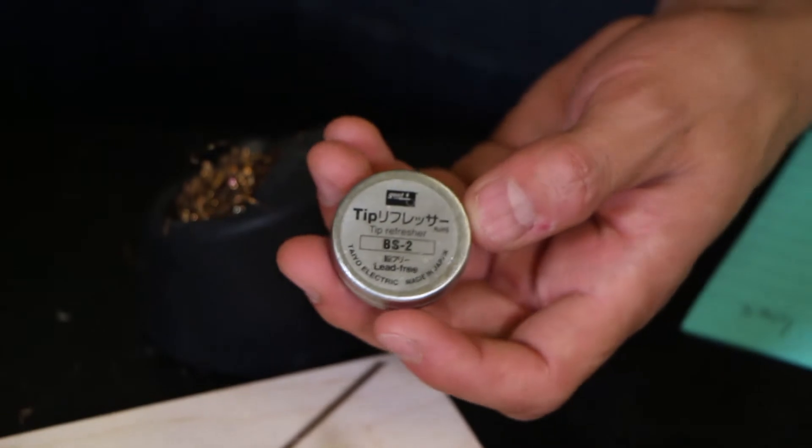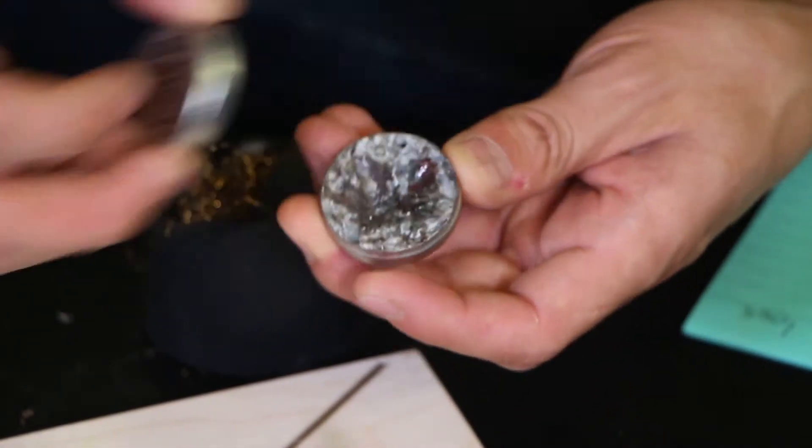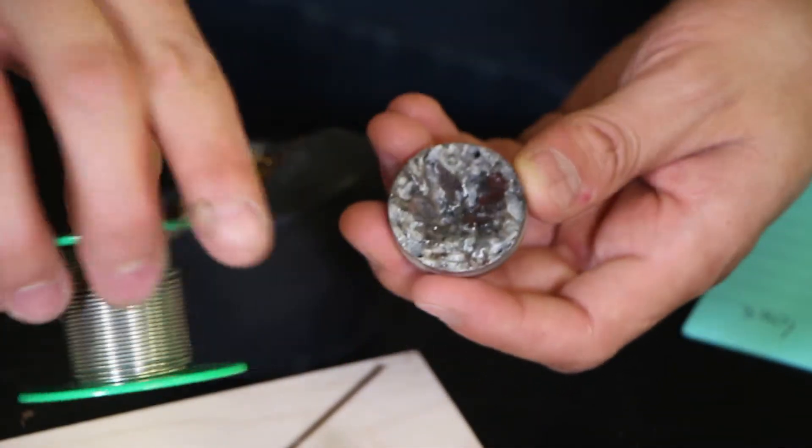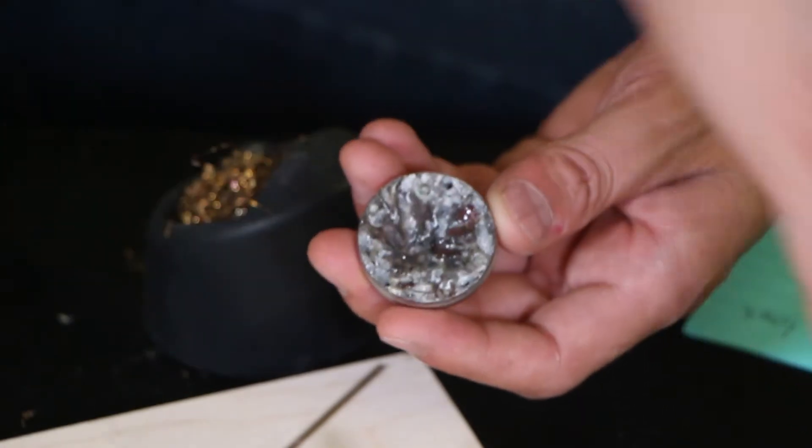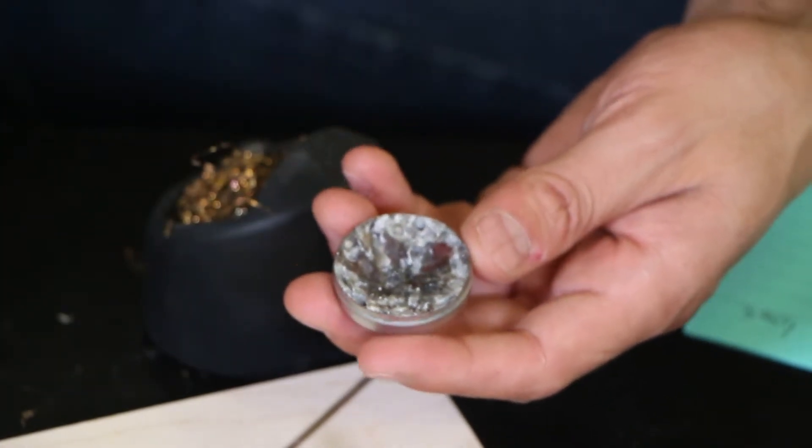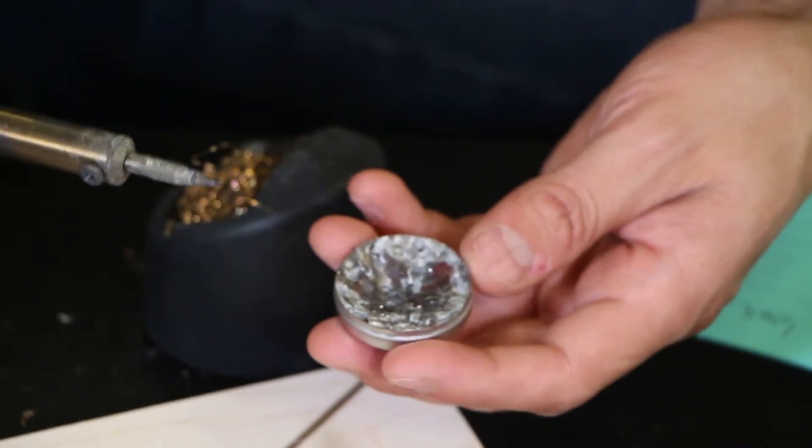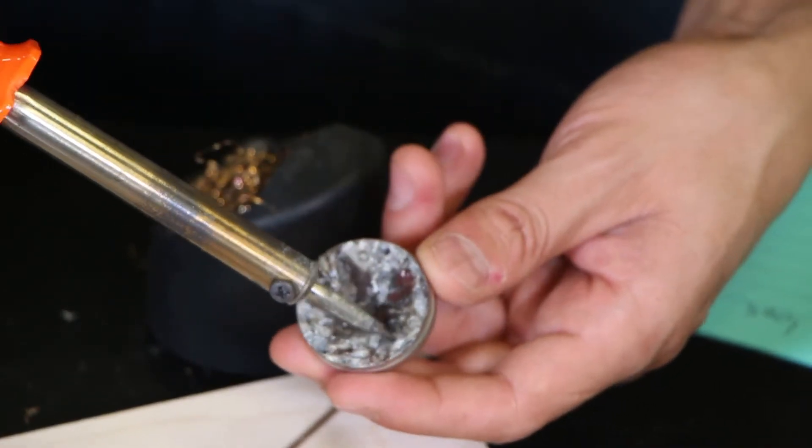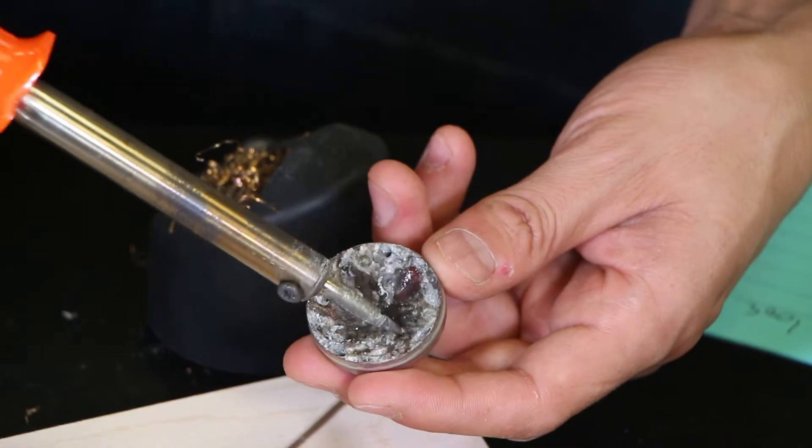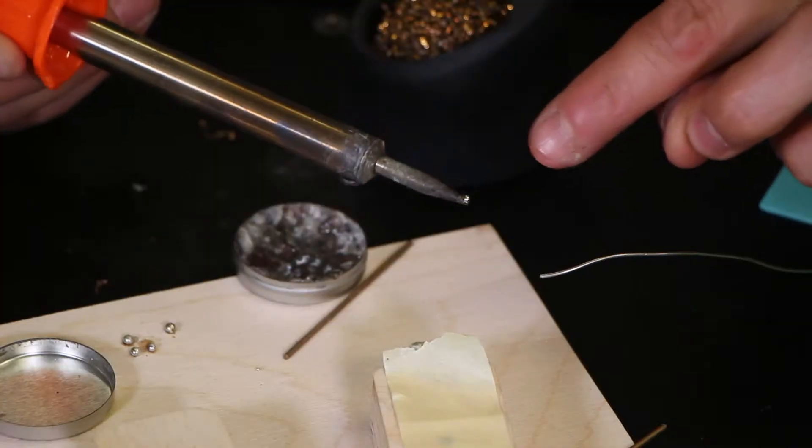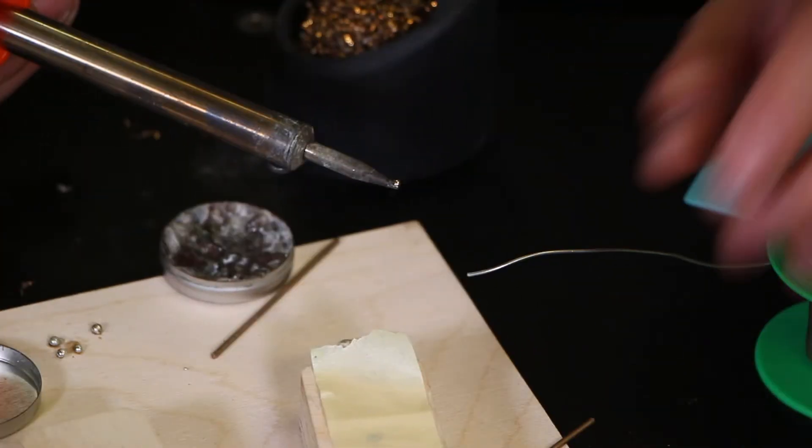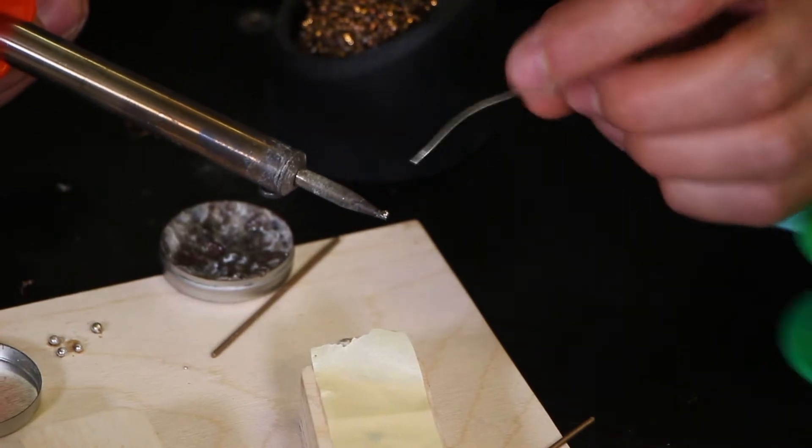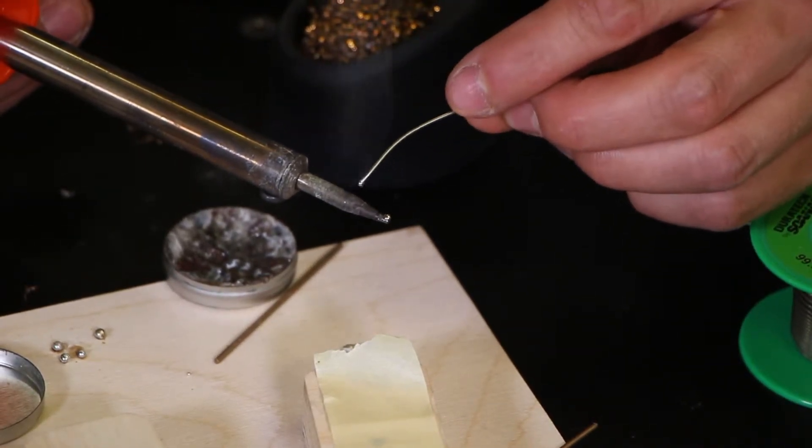Now we're going to try again. You can see the solder is now starting to stick to the soldering iron. Another trick up our sleeve is tip tinner. Tip tinner is basically flux, which is that stuff that's in the inside of our solder that helps clean things, mixed with a little bit of solder granules.